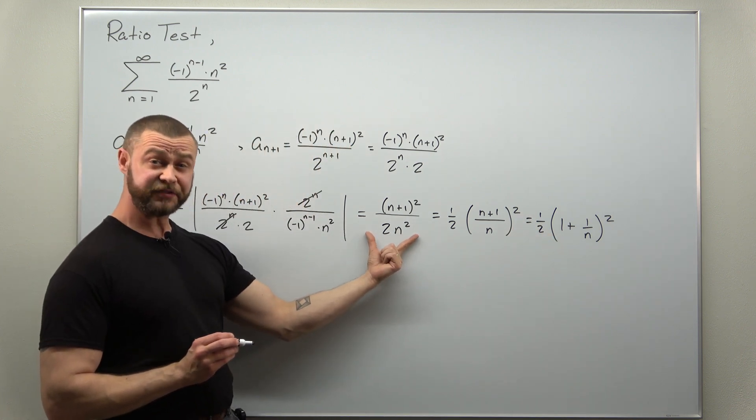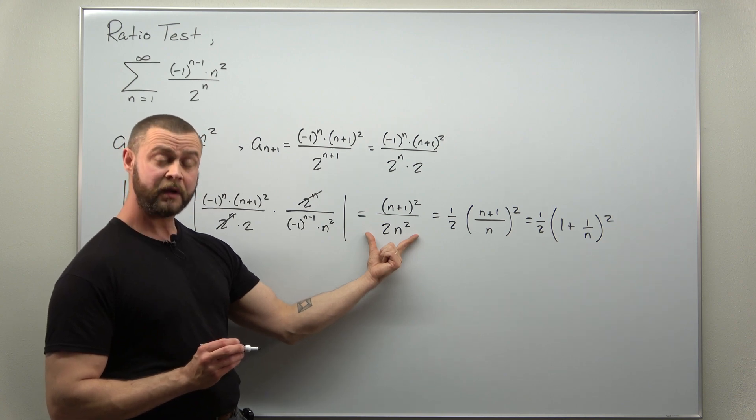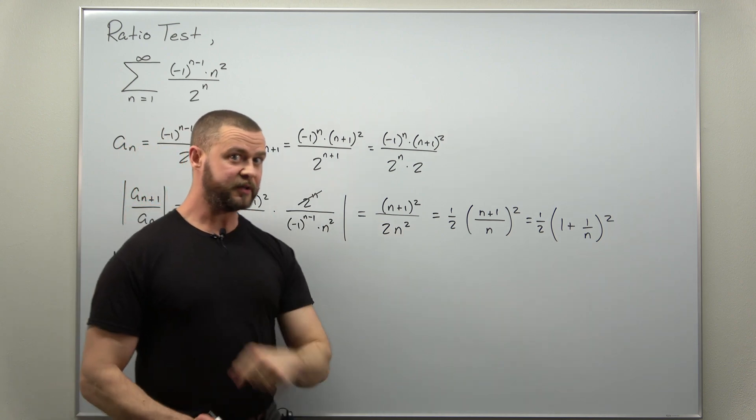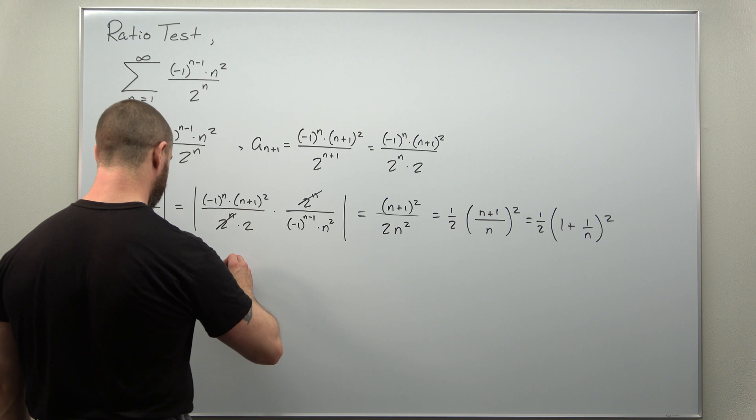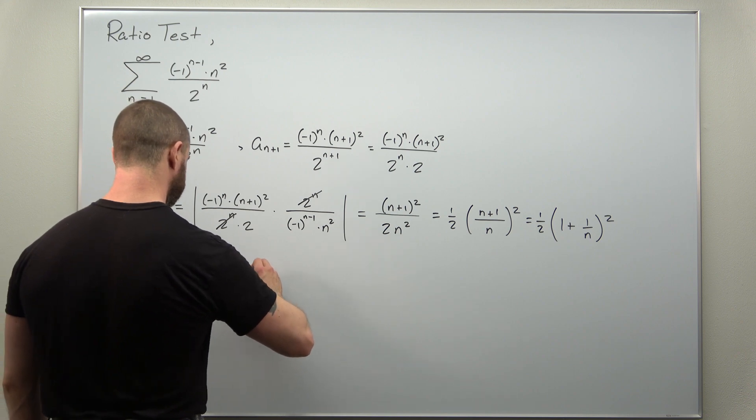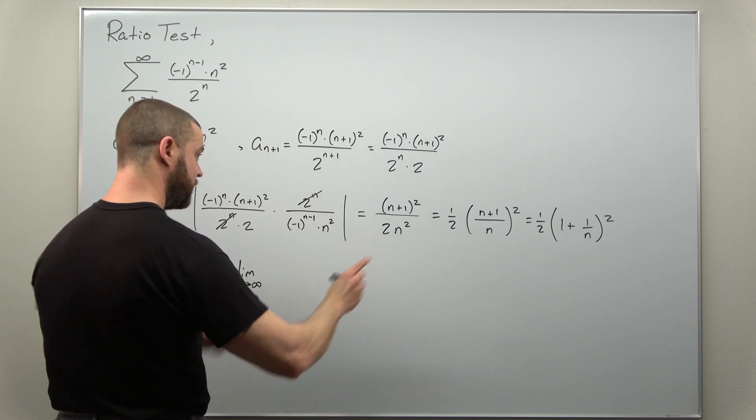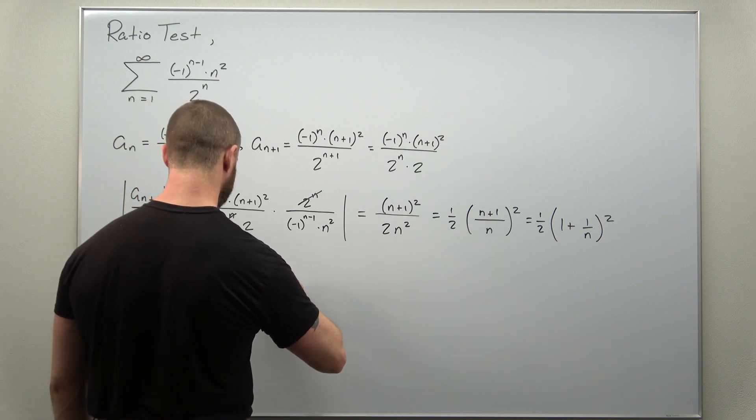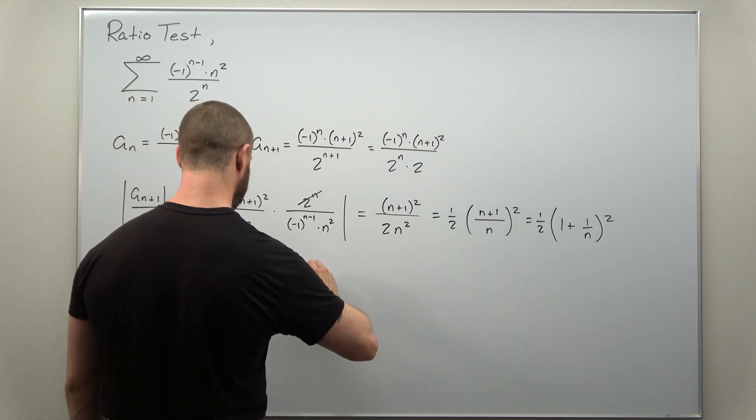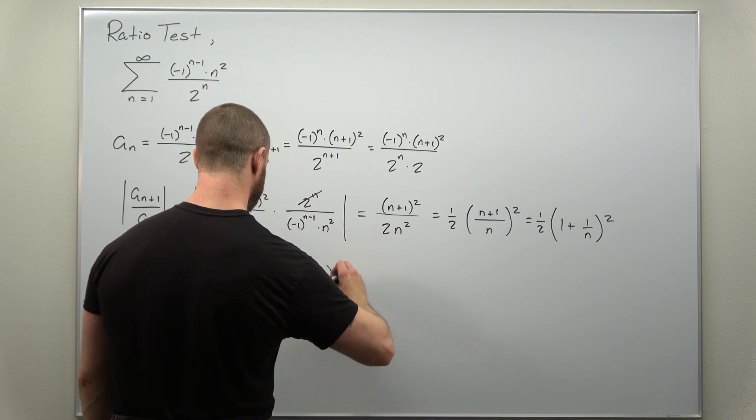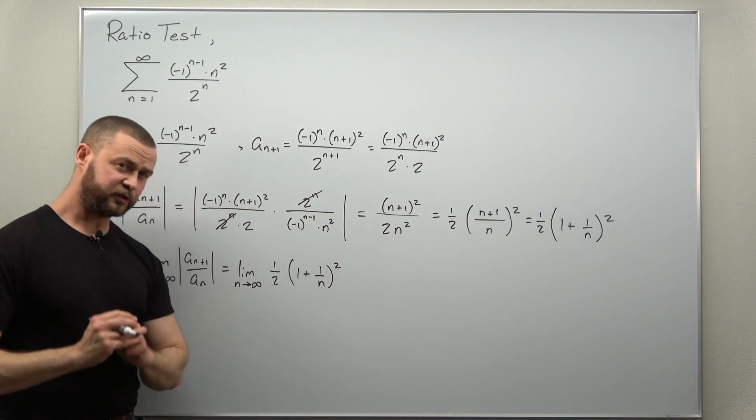If you're going to use this version right here, kind of in the middle, you might want to apply L'Hopital's rule, but let's use the fully simplified version. So we'll take the limit now as n goes to infinity of one half times one plus one over n all squared.